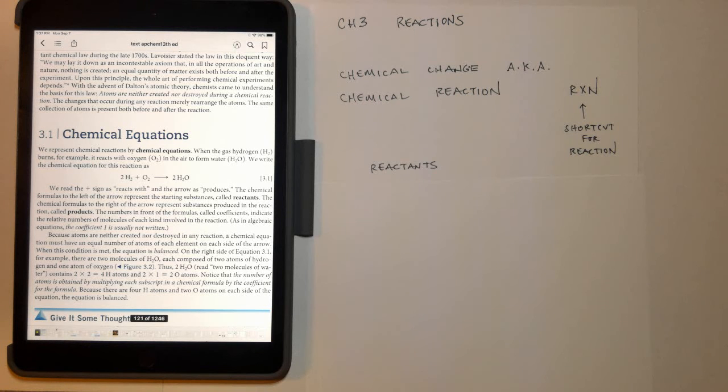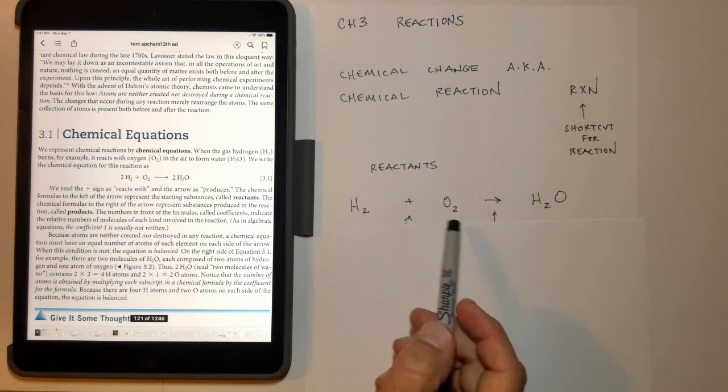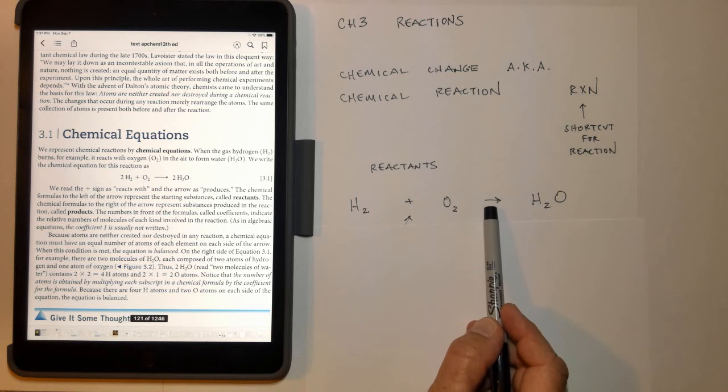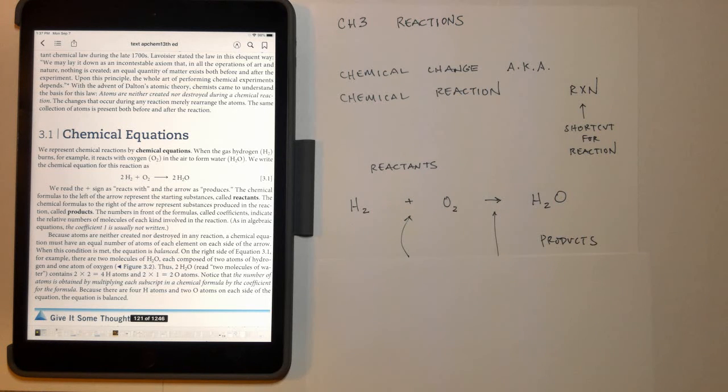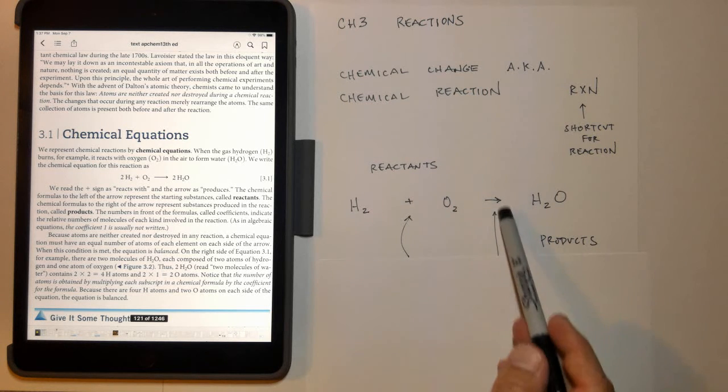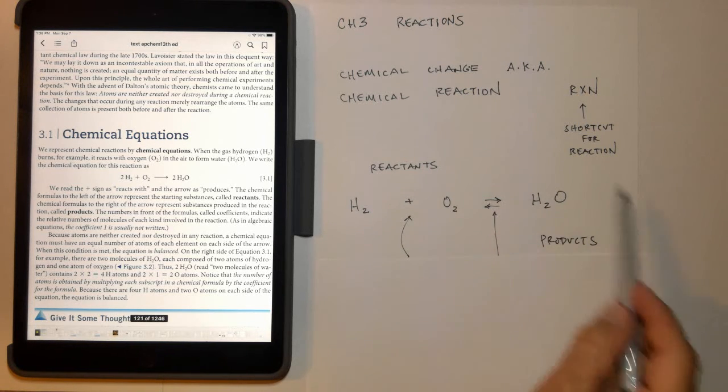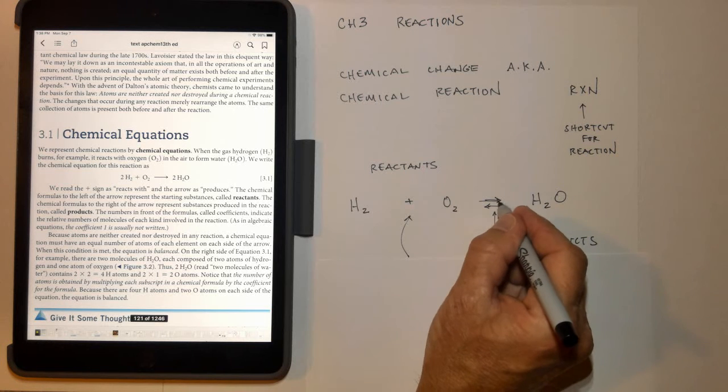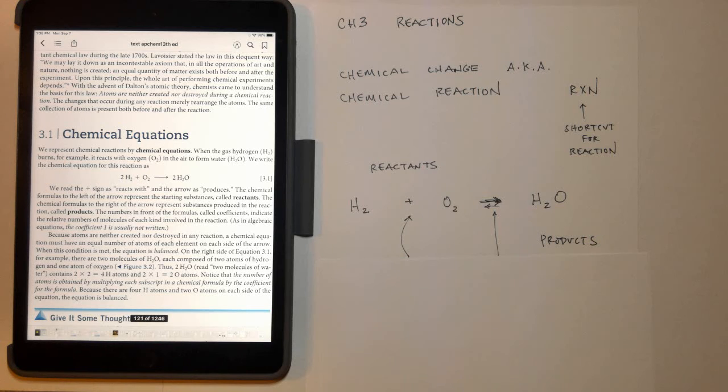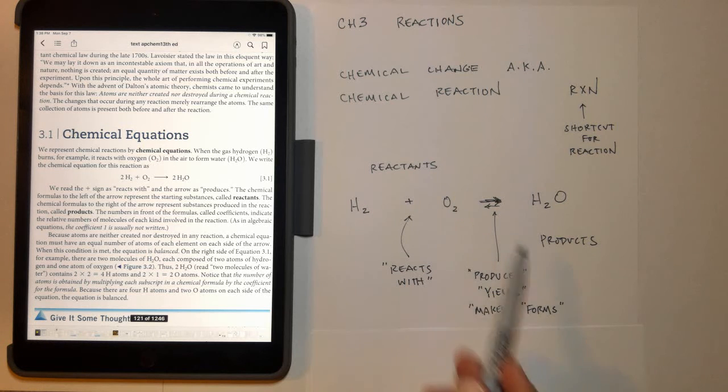So in a chemical reaction we write what are called chemical equations. There are reactants in the chemical equation on the left-hand side of an arrow and then there are products on the right-hand side of the equation. Reactants are always on the left, products are always on the right. Sometimes you'll see an arrow that goes both directions but it still doesn't matter. For right now, we'll just see an arrow going to the right-hand side and we still define the left-hand side as the reactants and the right-hand side as the products. The plus sign means reacts with or combines with and the arrow means produces or yields or makes or forms.